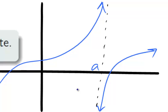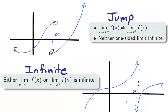Our last graph shows an infinite discontinuity. If either the left or the right-handed limit is infinite, then a discontinuity is identified as infinite. Notice on both graphs that the actual value is irrelevant to the jump and infinite discontinuities.